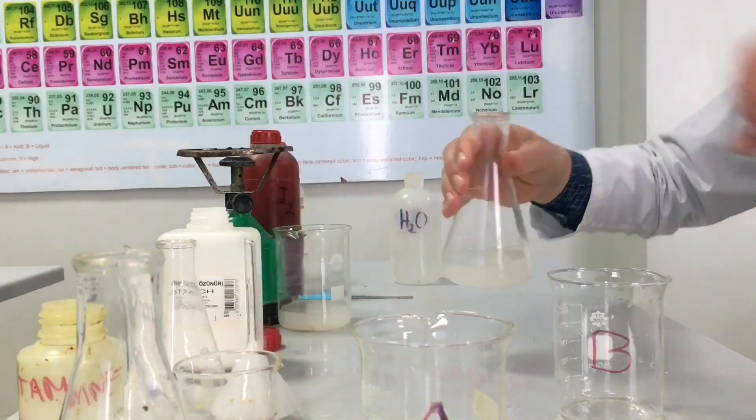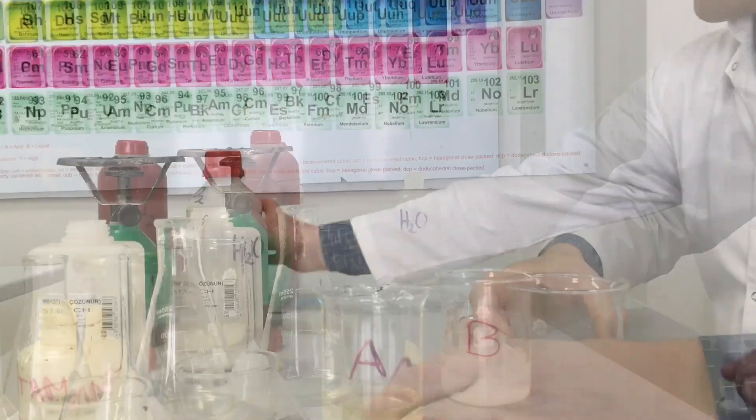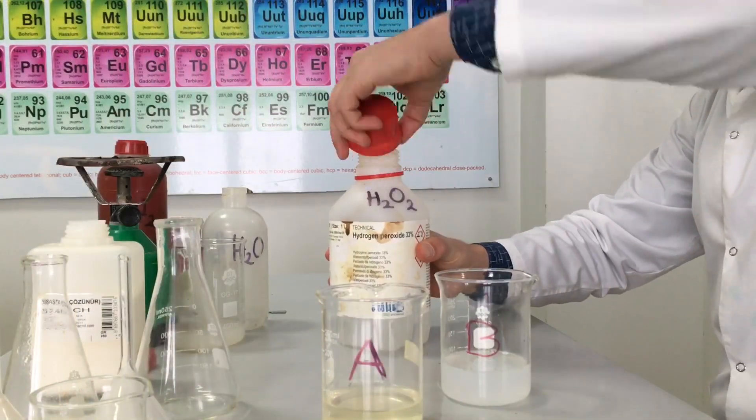Solution B is prepared by adding starch solution and some quantity of 3% hydrogen peroxide.